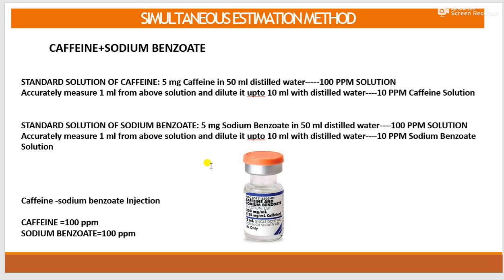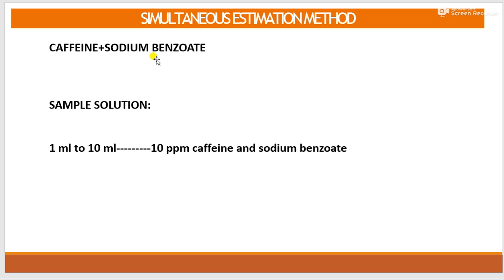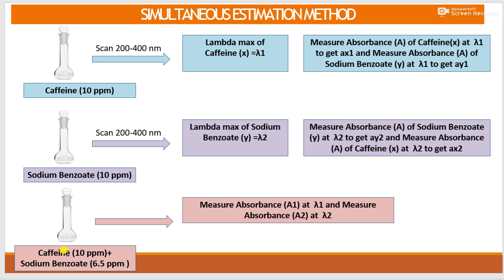The sample will be caffeine sodium benzoate injection. We will be using an in-house prepared caffeine sodium benzoate injection which contains 100 ppm caffeine as well as 100 ppm sodium benzoate. From that injection, 1 ml is taken and diluted up to 10 ml to get 10 ppm of each caffeine and sodium benzoate — that is a 10 times dilution. So we have three solutions: caffeine standard solution 10 ppm, sodium benzoate standard solution 10 ppm, and sample solution containing 10 ppm of caffeine as well as 10 ppm of sodium benzoate.